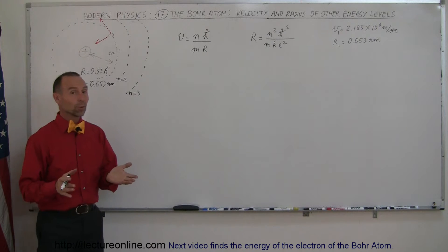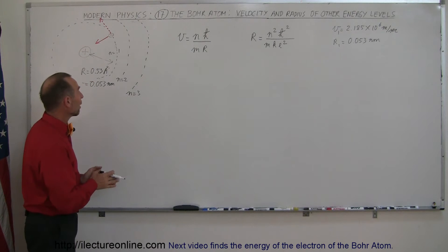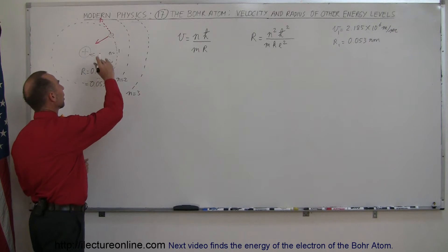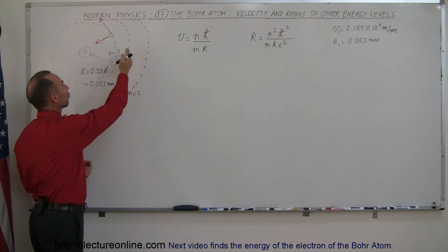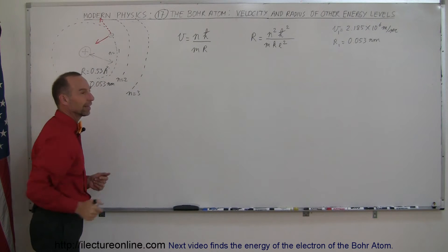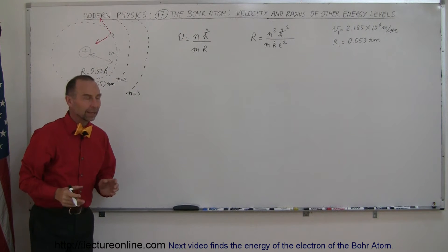In this video, we're going to explore the velocity and the wavelength of the electron in orbits other than the innermost orbit — like in the second, third, fourth, and fifth energy levels.